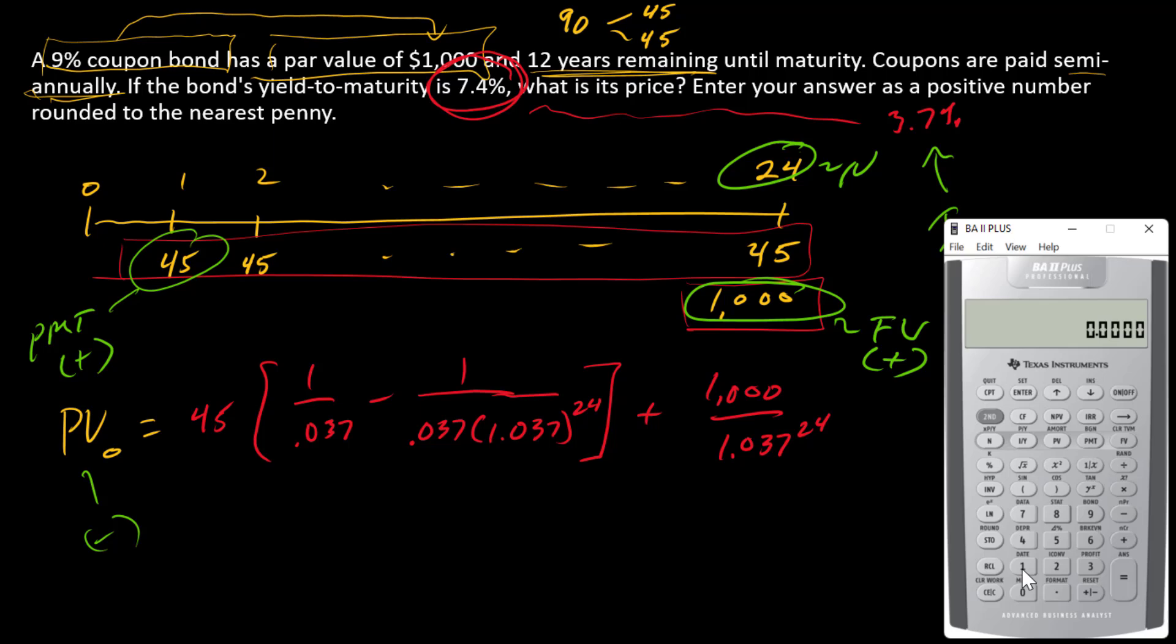All right, so let's enter these one at a time. $1,000 is FV, $45 is payment, 3.7 is I, and 24 is N. To compute my PV, I have $1,125.81. That is the answer.